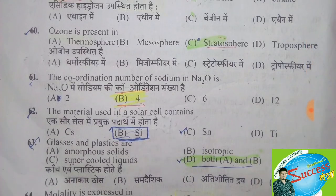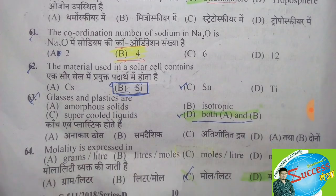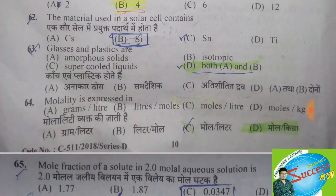The stratosphere is the second upper layer of our atmosphere. The coordination number of sodium in Na2O is — the correct answer is option B, 4. The material used in solar cells — the correct answer is option B, silicon.